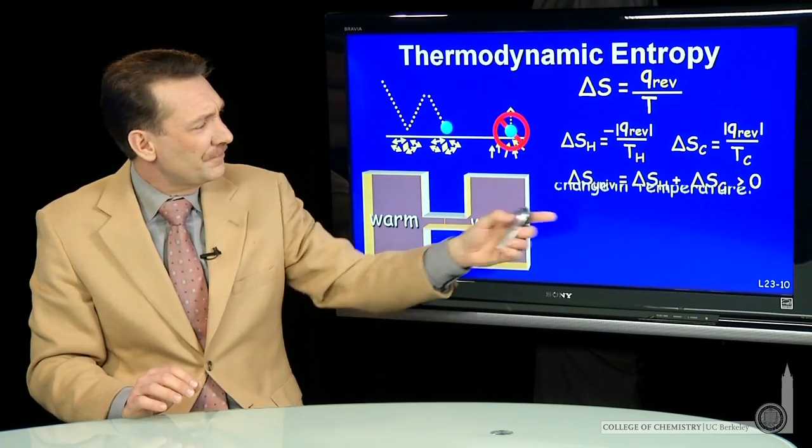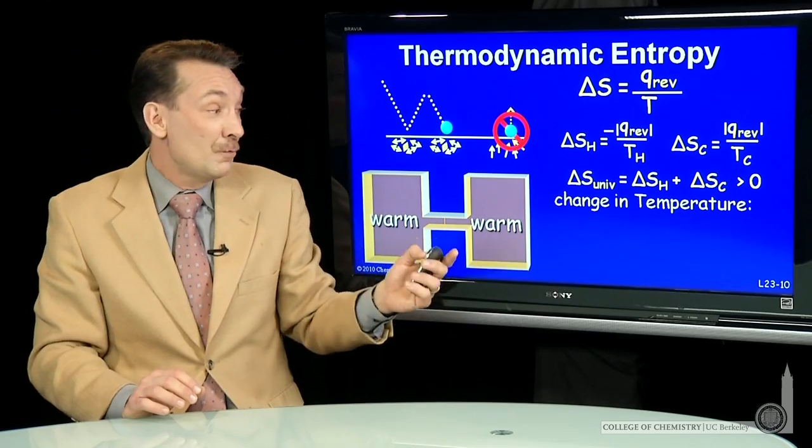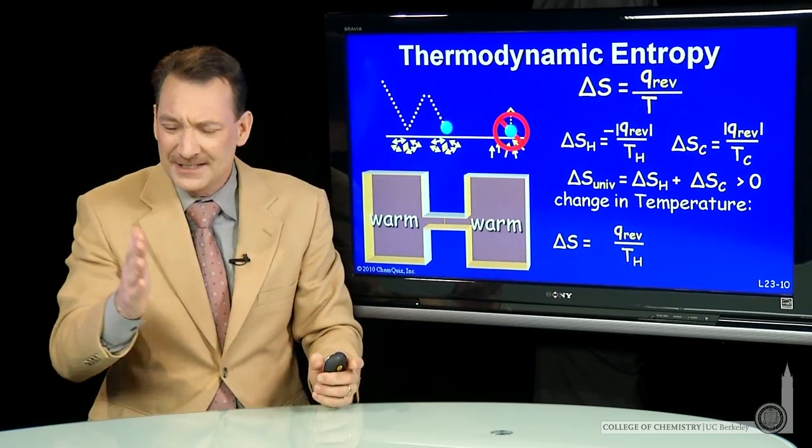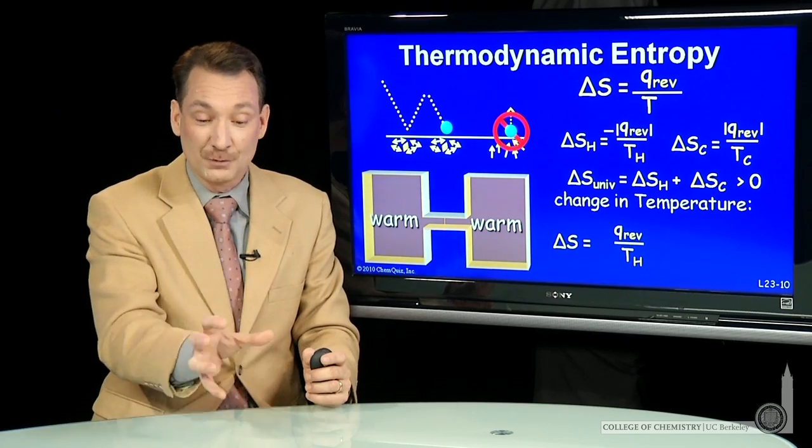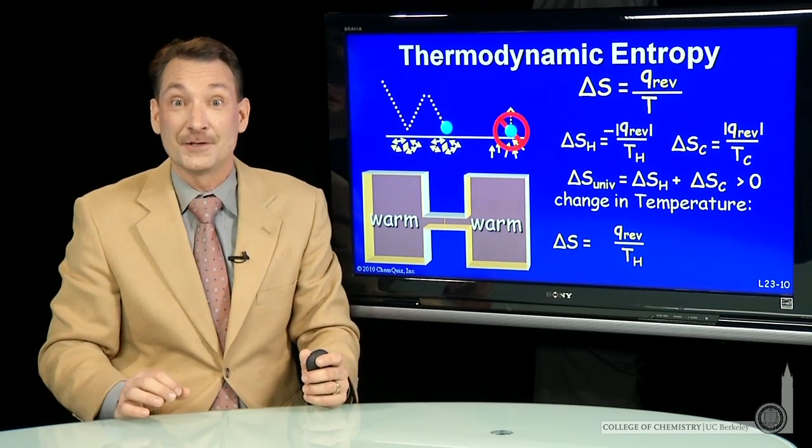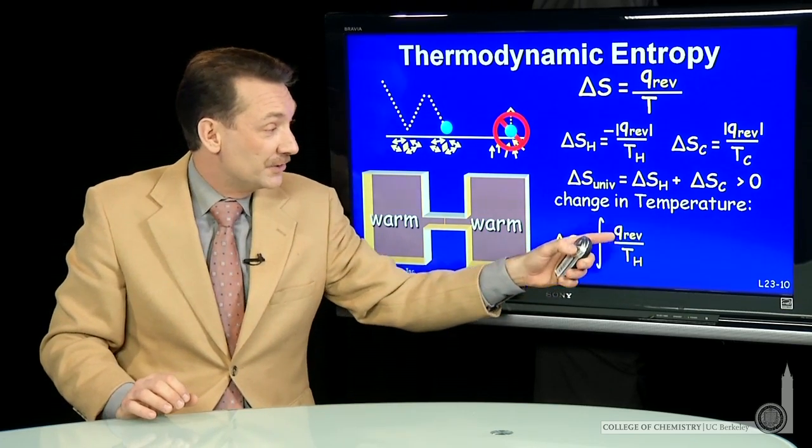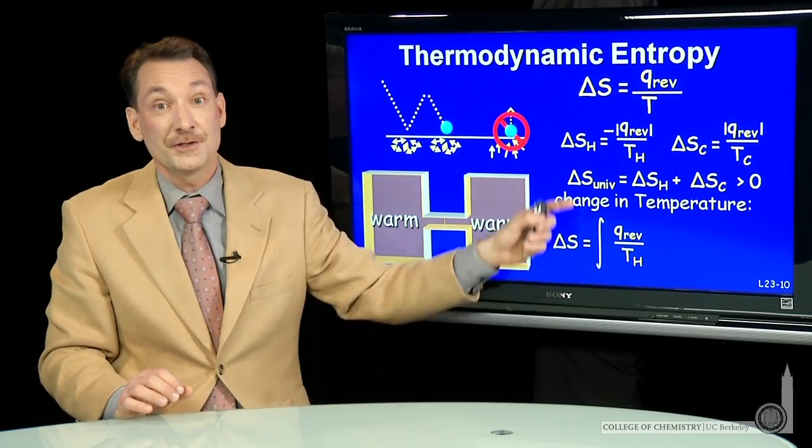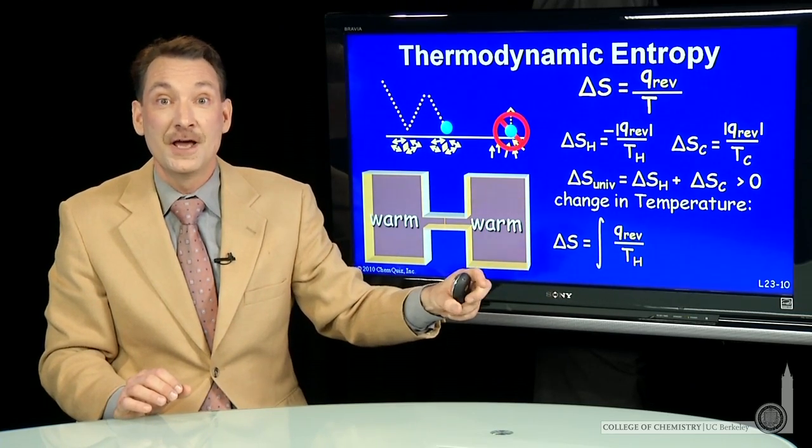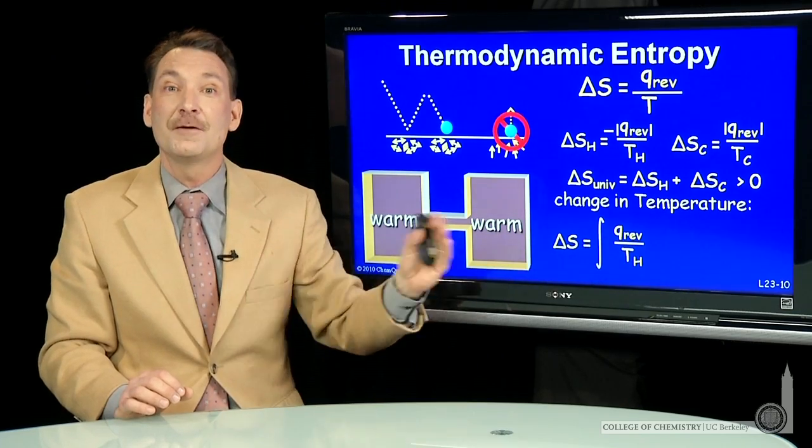What if the temperature changes? We can simply add up, divide it into tiny steps, and add up all the individual temperature changes at constant temperatures. We transfer a little heat at one temperature, then transfer a little more heat at a higher temperature, transfer a little more heat at a higher temperature. The sum of all those becomes an integral.